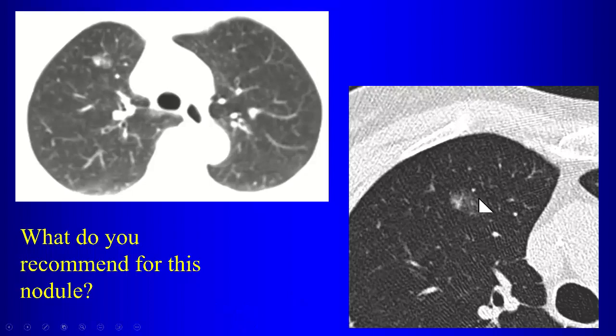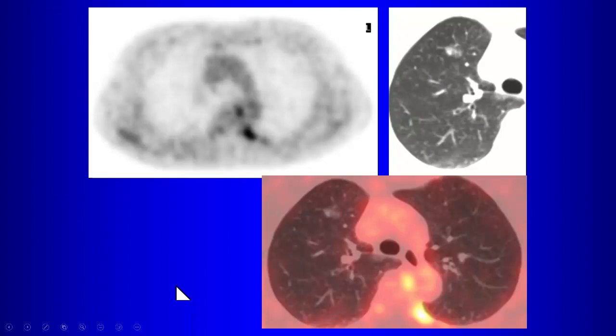This nodule has mostly ground glass component with a small solid component. Would PET-CT be beneficial here? No — with a ground glass component, especially with a small solid component, you can get false negative results on PET-CT. If malignant, these tend to be well-differentiated adenocarcinomas, which give false negative PET-CT results.